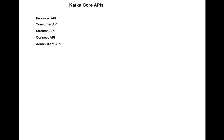Before that, let me talk about the Kafka core APIs. Kafka has five core APIs: it has a producer API, a consumer API, a streams API, a connect API, and an admin client API. The producer API allows applications to publish data to a topic. The consumer API allows the application to consume the data.